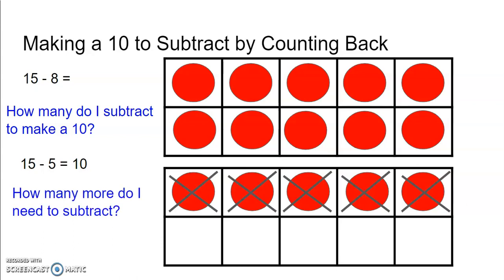So my next question to myself is, how many more do I need to subtract? Looking at the equation, I know I want to subtract 8 in total, and I've already subtracted 5. So now I'm going to keep counting until I've subtracted my 8. So 5, 6, 7, 8. So now that I've subtracted 3 more to make my 8.